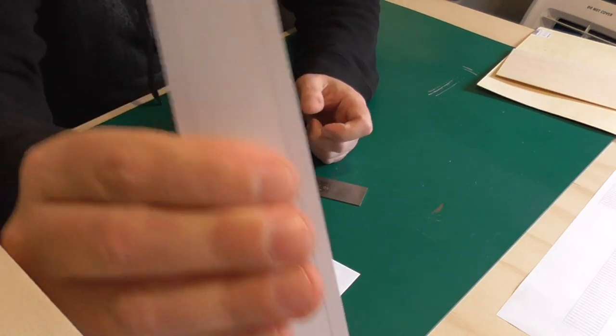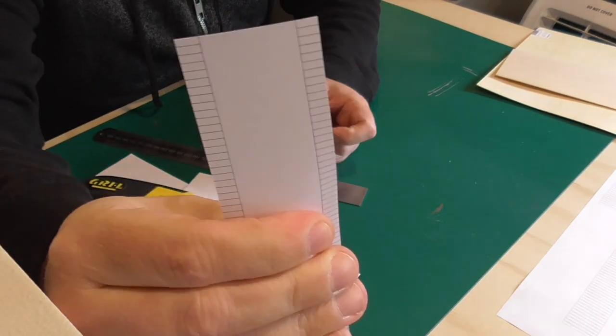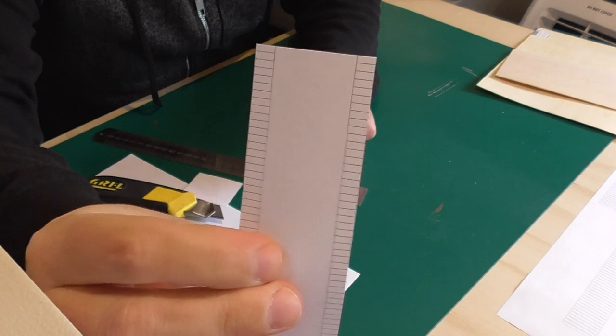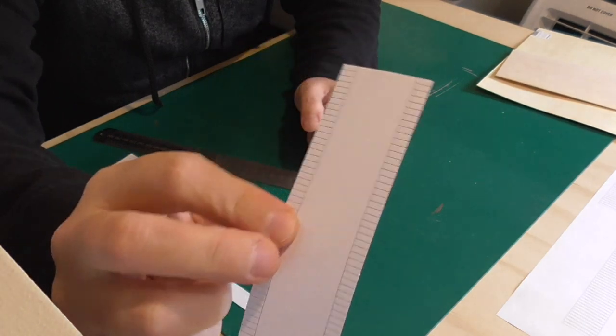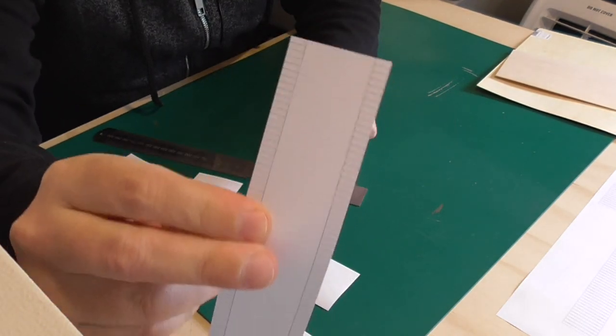In my method, essentially what I do is trim this right down to the actual template lines, and I just trim one end just so that we know where it starts. Now this could all be drawn up with a ruler and a pencil. I just find it easier to work it up on the computer.